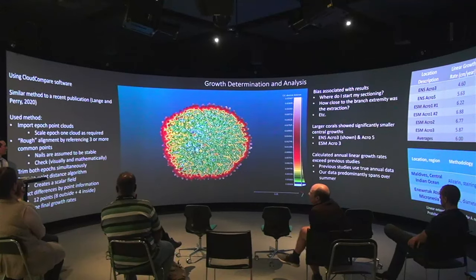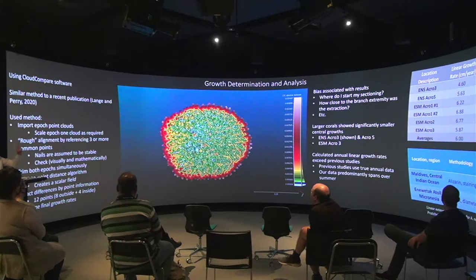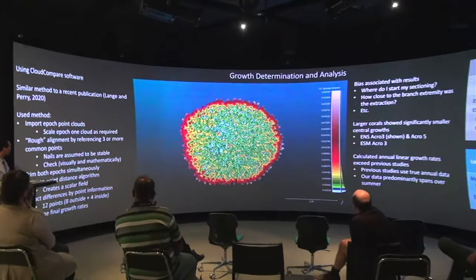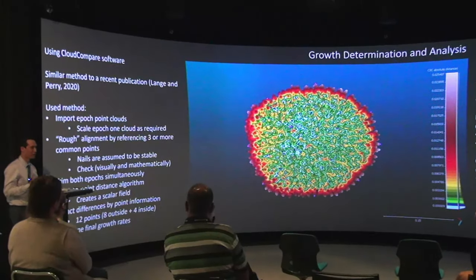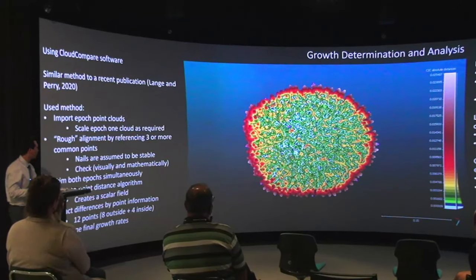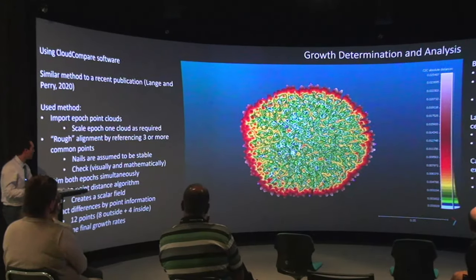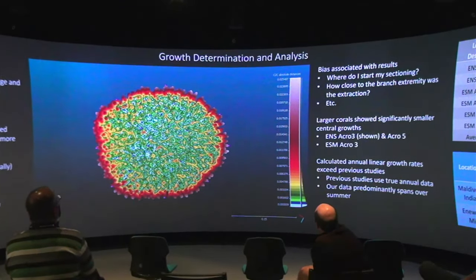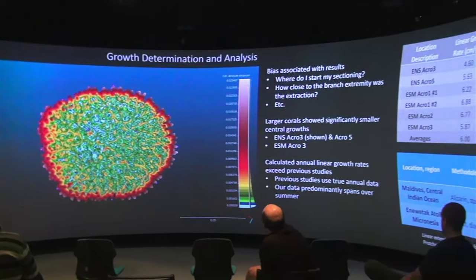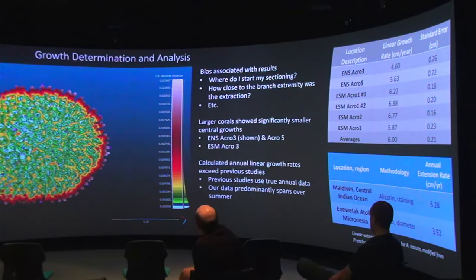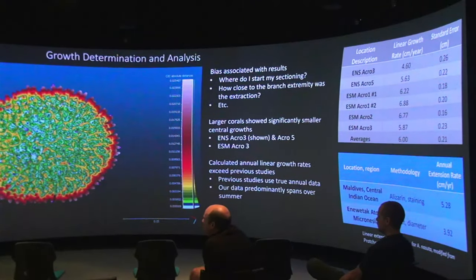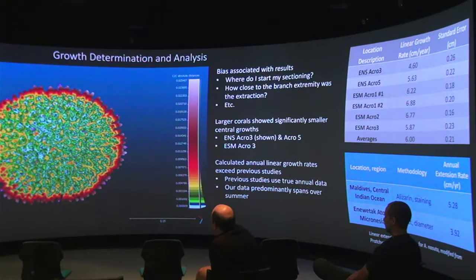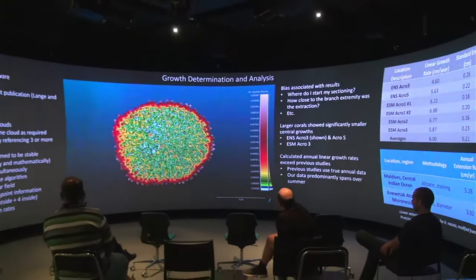The really important bit is the actual growth analysis. A lot of this method can be related to a study in 2020 by Lange and Perry. It's very similar to what I've done, except I've slightly tweaked things to what I see as more appropriate for what we're doing. I'd like to quickly touch on what I changed and why. The immediate thing is you've got to bring your two point clouds into Cloud Compare — which is what we're using for this, as it's often used by publications. You've got to bring your two point clouds in, but you need to align them. There is the rough alignment, done through point picking, where these nails come in — we assume they're in fixed places and not changing through time.